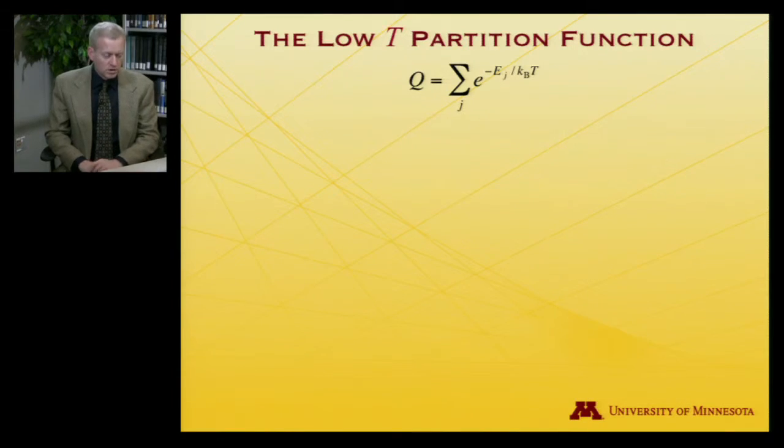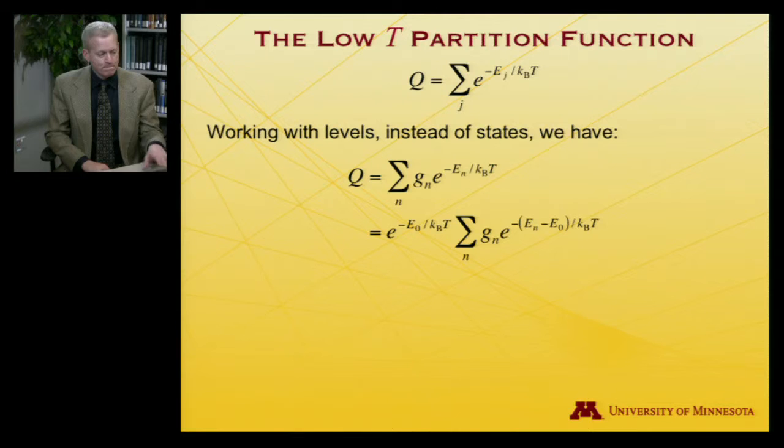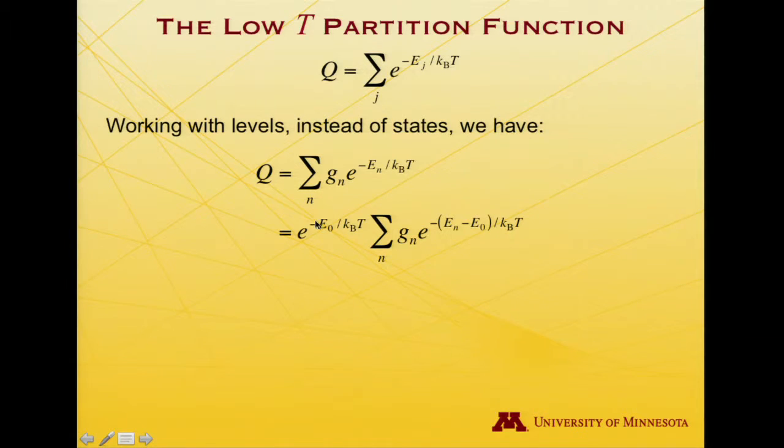Well, so let's look at the partition function as temperature goes to zero, the low temperature partition function. And to make things a little more convenient, let me work with levels instead of states. And so remember what that means is I'm now going to switch my index over which my sum is running. I'm going to run over energy levels, so all levels that have the same energy. The degeneracy which expresses how many levels have the same energy, g, e to the minus energy of that level over kT. And let me in fact then pull out from this expression e to the minus the ground state energy, e zero over kT.